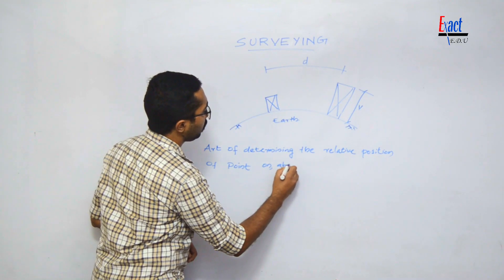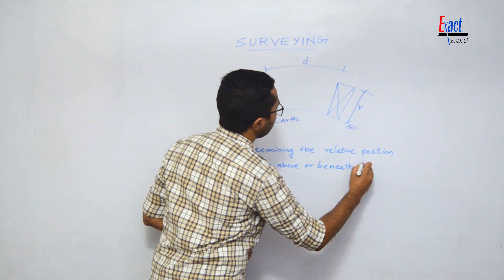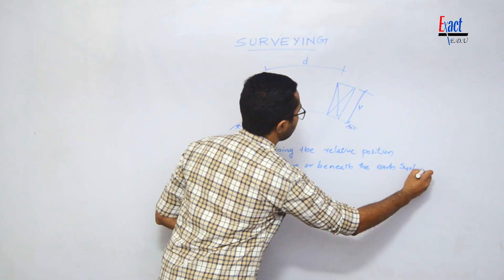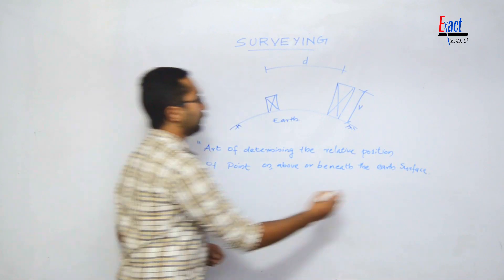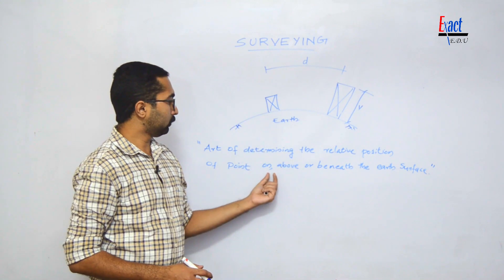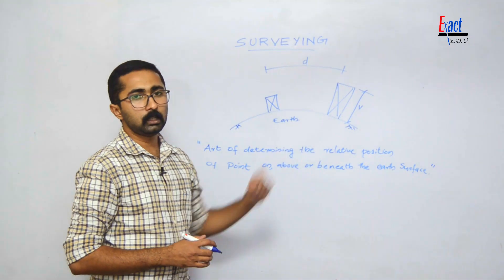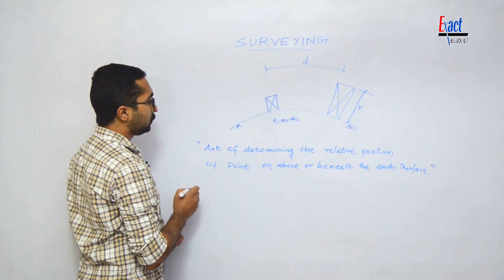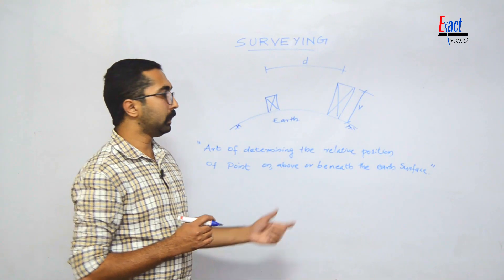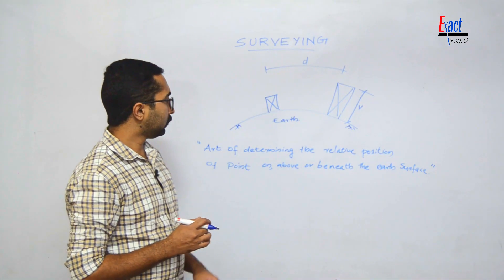Surveying covers points on, above, or beneath the earth's surface. We can determine the relative position of points — their distance and direction, as well as their elevation. The elevation of the position on the earth's surface is also determined.